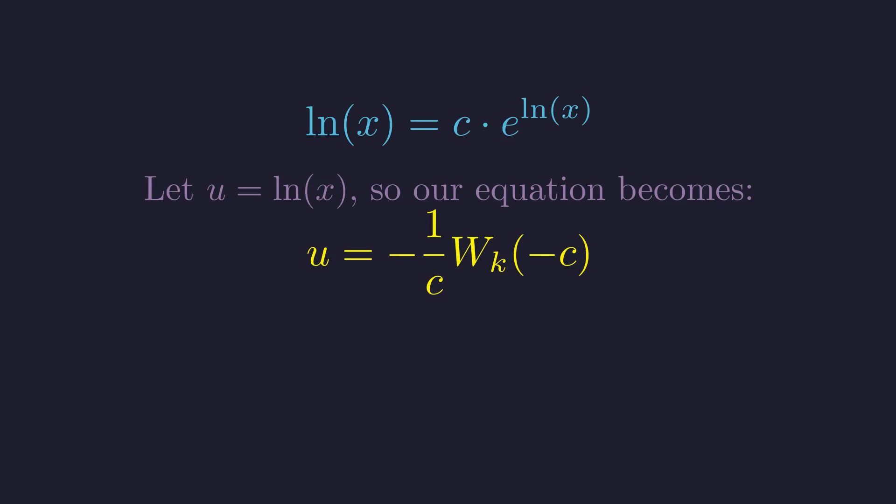Remember, u equals the natural log of x, so we substitute back. So the natural log of x equals negative 1 over c times w of negative c. To solve for x, we exponentiate both sides. So x equals the exponential of negative 1 over c times w of negative c. Now we substitute back our original constant c equals the natural log of pi over pi.